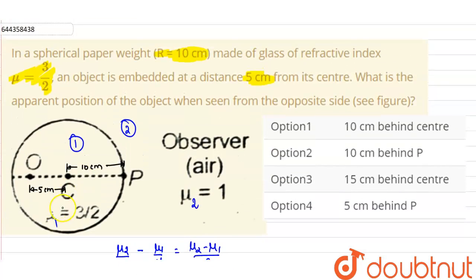So from P it is at minus 20 centimeters. So the apparent position of the object will be over here, O dash. So if we choose from the options, that is 10 centimeter behind the center is correct.